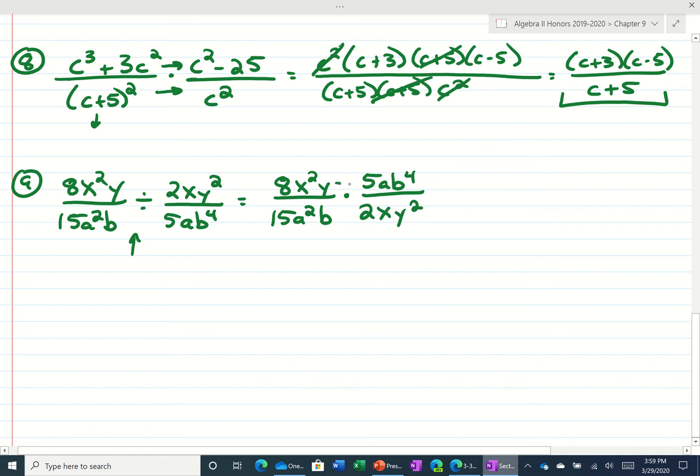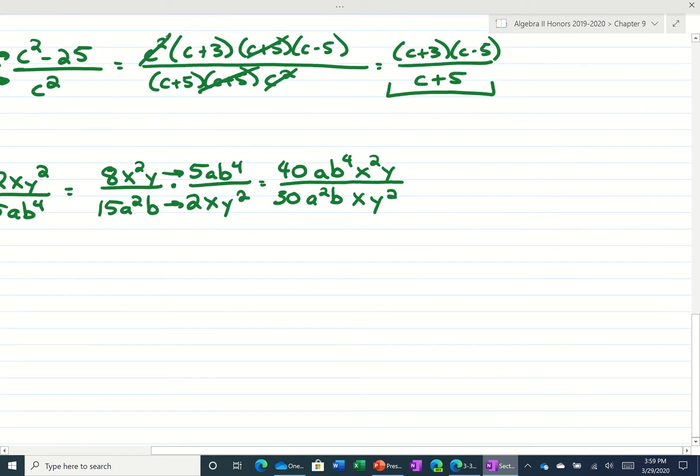5ab to the fourth divided by 2xy squared. Now I'm going to go ahead and multiply straight across. I get 40ab to the fourth x squared y divided by 30a squared b and then xy squared. So I'm going to do each of these individually. 40 divided by 30 is 4 thirds. a to the first divided by a to the second is a to the negative first. b to the fourth divided by b is b to the third. x to the second divided by x is x to the first. And y divided by y to the second, if you subtract the powers, you get y to the negative first. So any of these negative powers go to the bottom. We wind up getting 4b cubed x divided by 3ay.